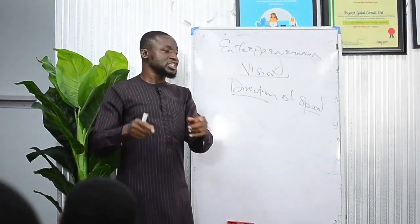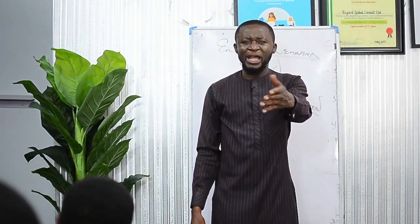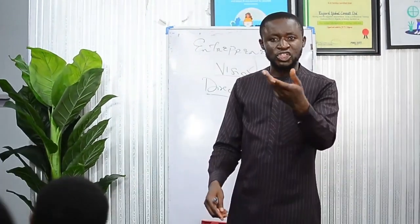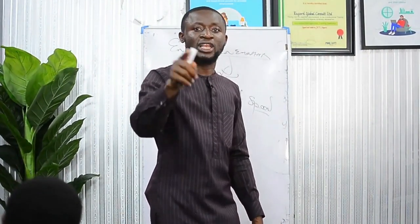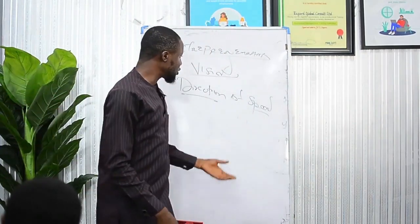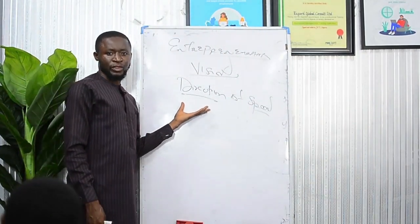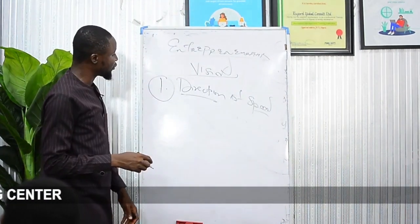Speed means you are doing what everybody is doing because it is trending. Young people today are interested in what is trending — they see fake lives on social media and want to live that way. At the end of the day they frustrate themselves because most of what they see on social media is fake. So you don't need to copy anybody. Find your gifts and talents so you will be in the right direction. That is the number one importance of having a vision.